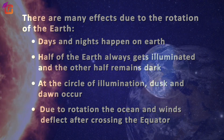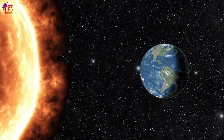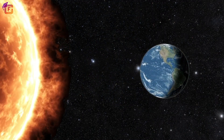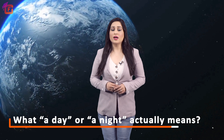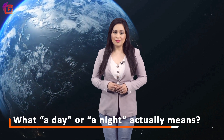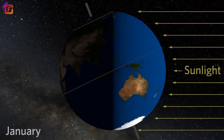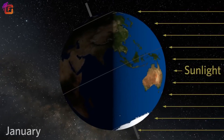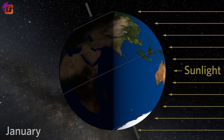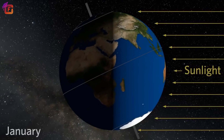Both due to rotation, the oceans and winds deflect after crossing the equator. Let us explain these effects. Days and nights are because of the Earth rotating about its axis and not its orbit around the Sun. The part of the Earth which receives sunlight is the day, and the part which is in shadow because it does not receive the light of the Sun is night.